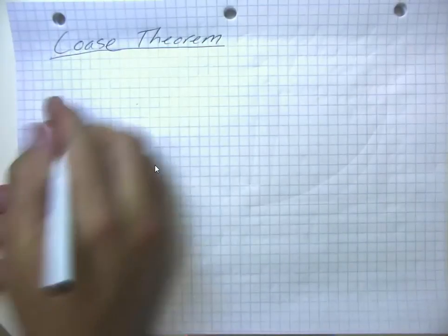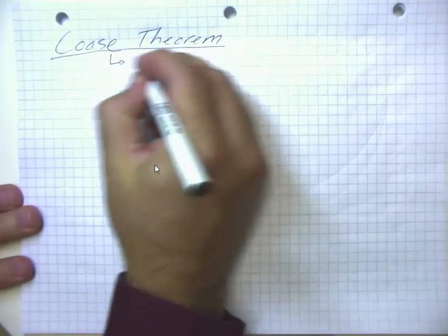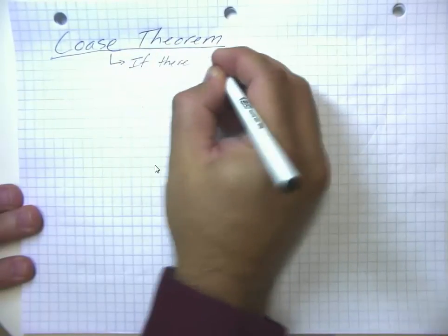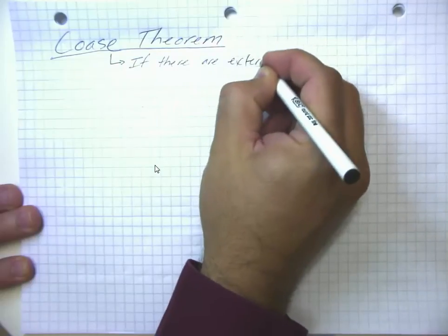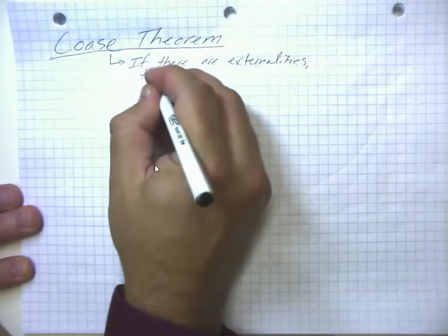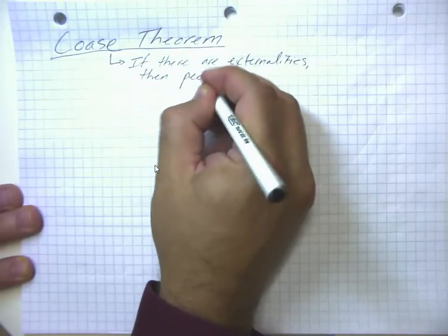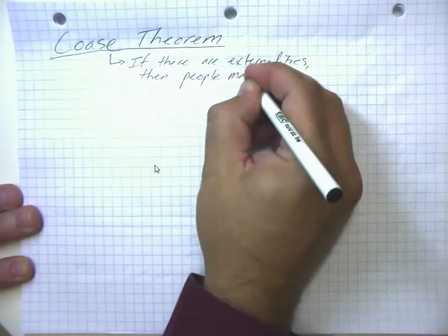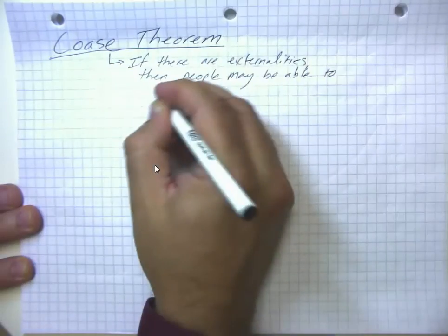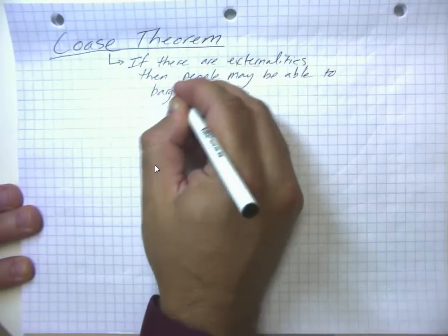So the Coase Theorem is the idea that if there are externalities, then people may be able to bargain their way to the efficient outcome.